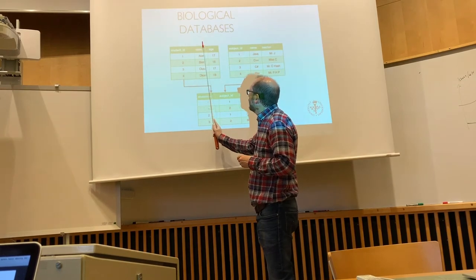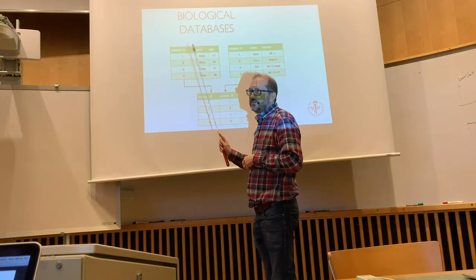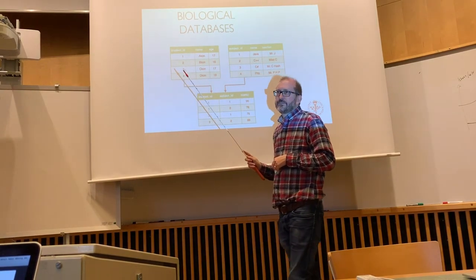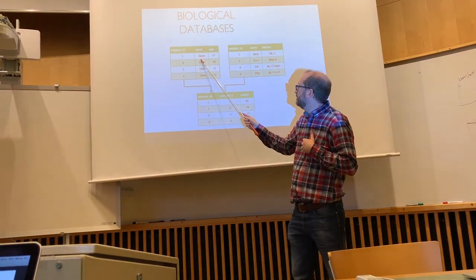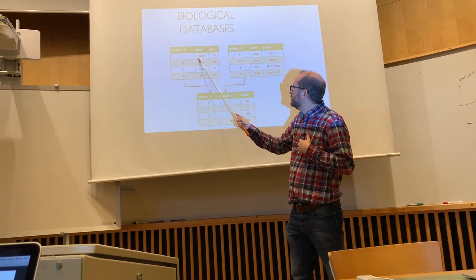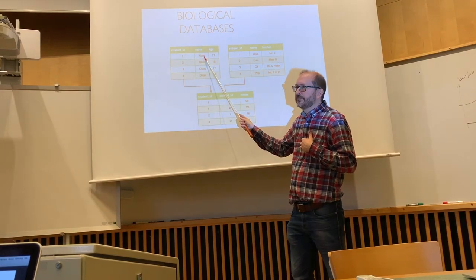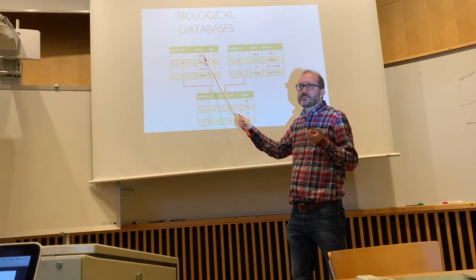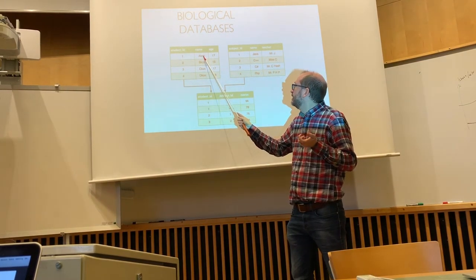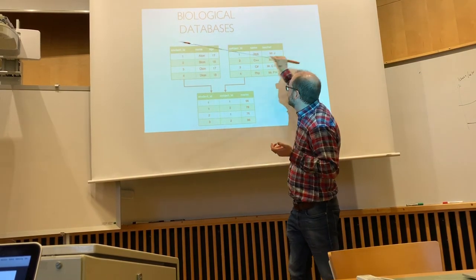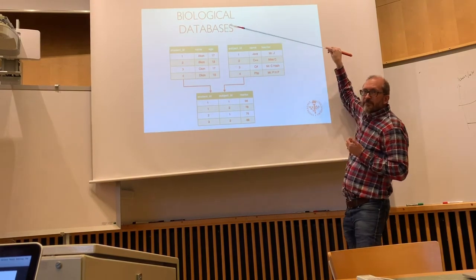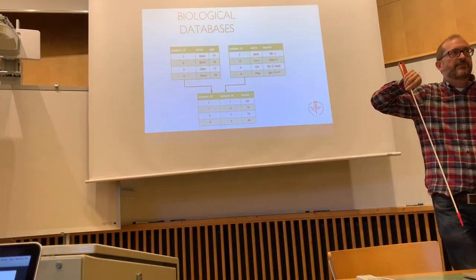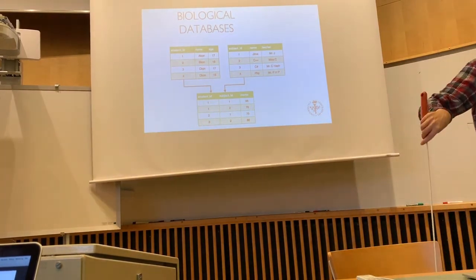These are columns — you can also call them fields. The value of a field in a certain record is just a value, and the record is a row.